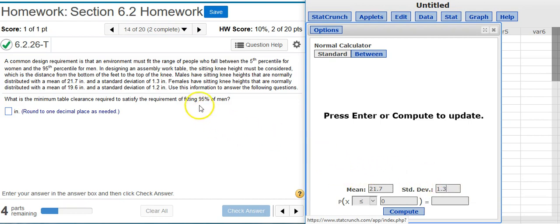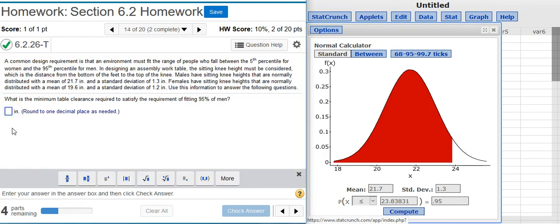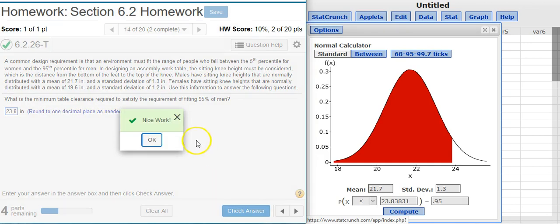We want to fit ninety-five percent of men underneath the table, so the probability of ninety-five percent is going to go here. And this field is going to show me the answer that I'm looking for, which when I hit compute comes out to 23.8 inches. So I put that here in my answer field. Nice work.